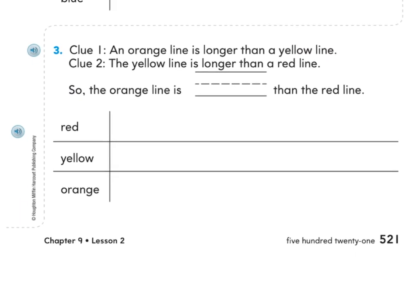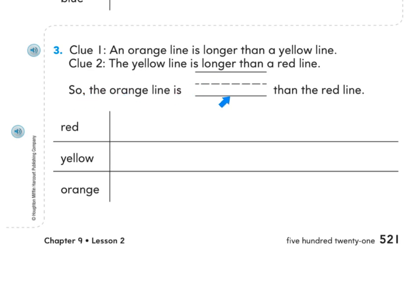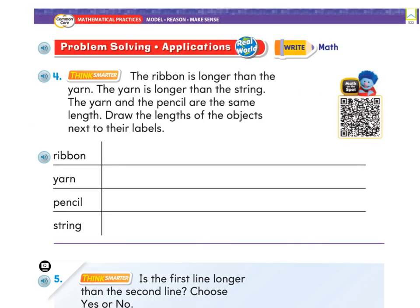When you're done, go down to number three. Clue one: an orange line is longer than a yellow line. Clue two: the yellow line is longer than a red line. Then fill in your sentence: so the orange line is — shorter or longer are your options — than the red line.